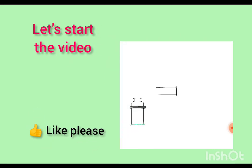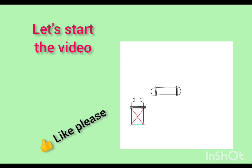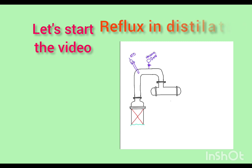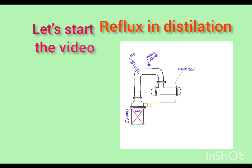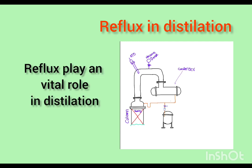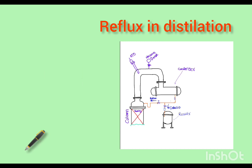Have you ever wondered how we separate different components from a mixture? One of the most popular ways is through distillation, and one of the key components in a distillation column is reflux. Reflux plays a vital role in a distillation column. It is the process of condensing a portion or all of the vapor produced in a distillation column and returning it to the column as liquid. This liquid helps in improving the separation of the different components in the mixture.